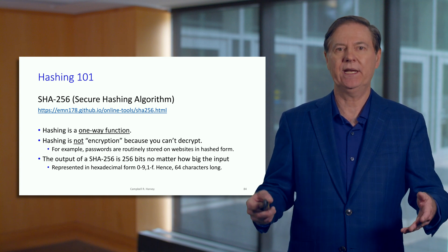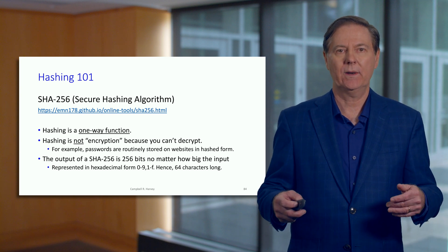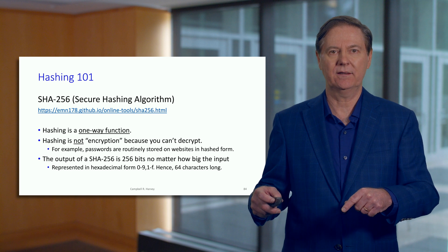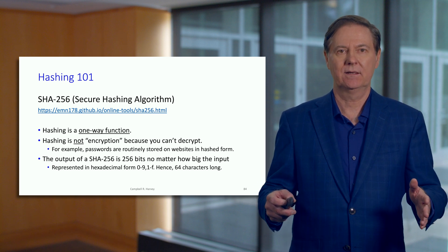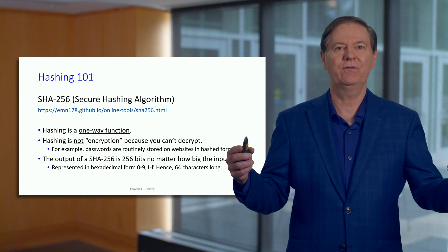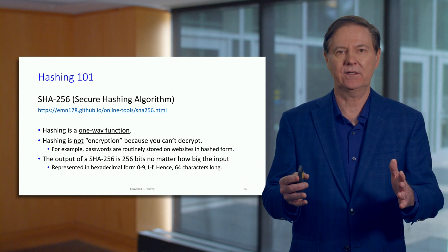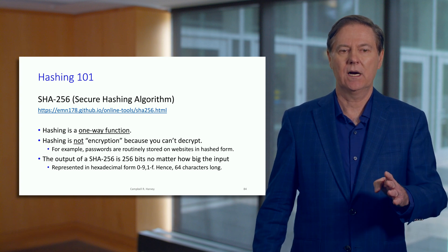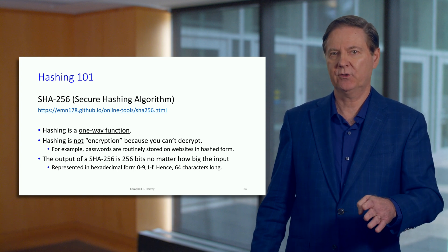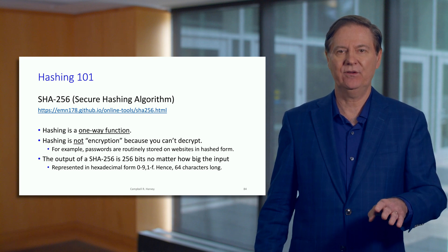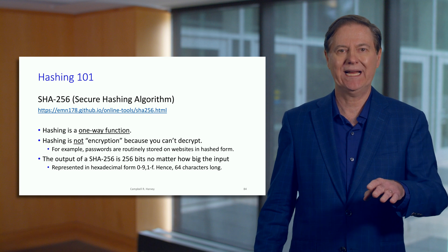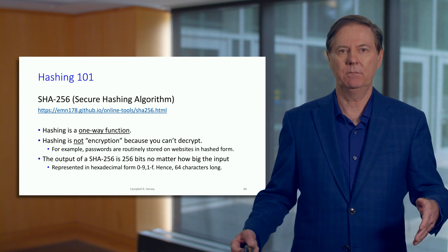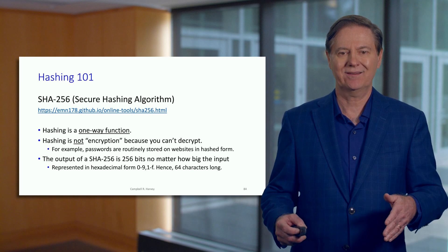Often we represent this in hexadecimal form. Hexadecimal is base 16 — the numbers zero to nine plus the first six letters of the alphabet, for a total of 16 characters. This makes it much more compact: instead of 256 zeros and ones, the hash is represented as 64 hexadecimal characters. And it doesn't matter the size of the input — whether it's the word 'hello,' a book, a picture, or a movie — the output is always 64 hexadecimal characters.